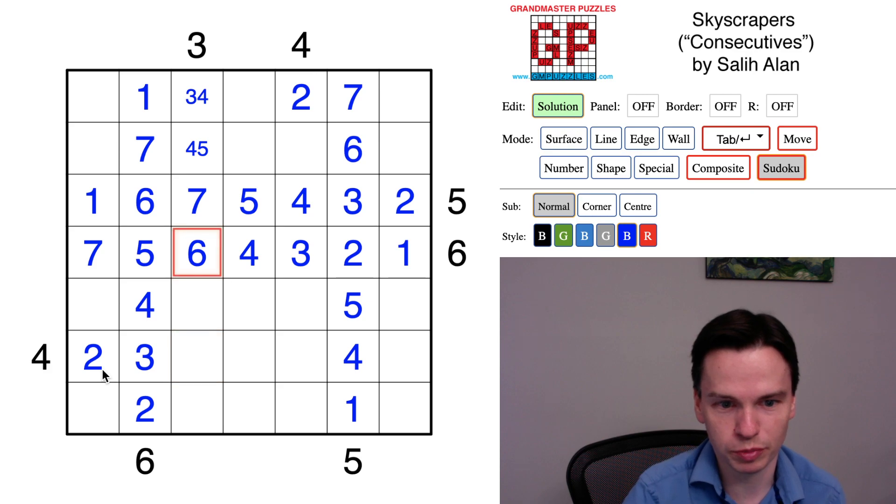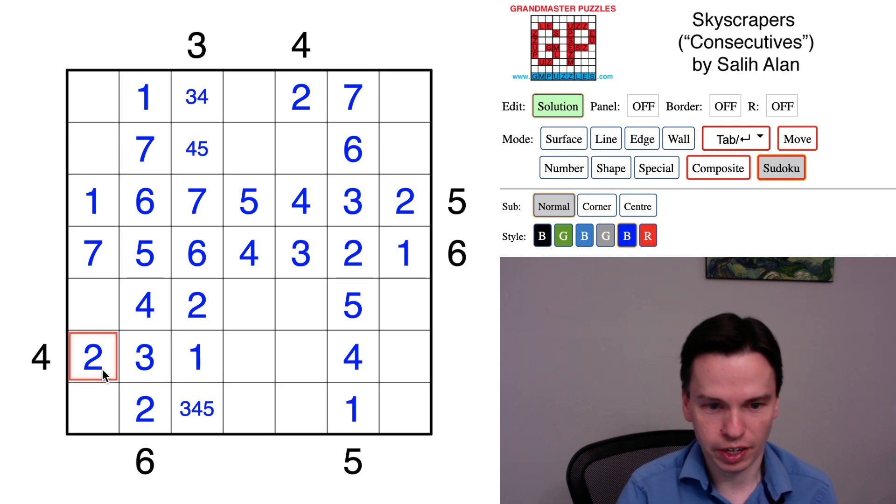That means in this column, one and two don't have a lot of spaces to go. Actually, there are two twos already given. This is the last position a two can go in. This is the last position a one can go in. I got a three, four, five. We now have two, three, one, and four in this row, so we've got five, six, seven to go.